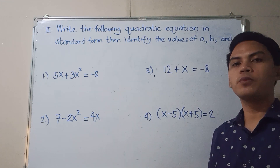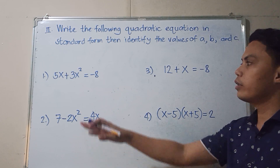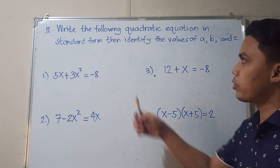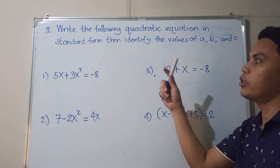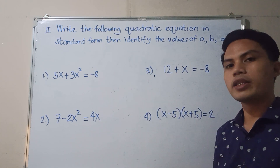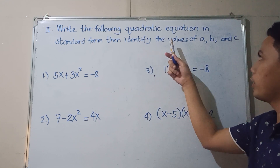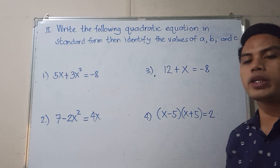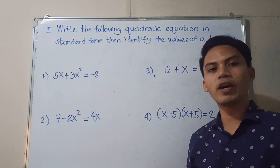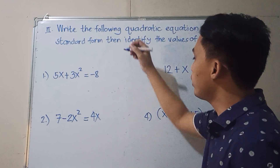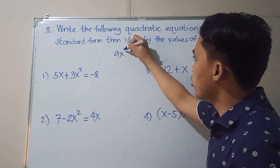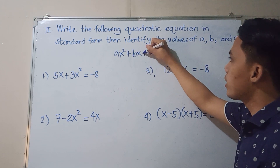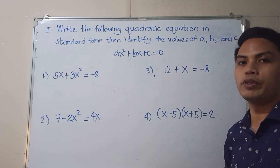This time, we're going to write the quadratic equations into standard form. The instruction is to write the following quadratic equations in standard form and at the same time identify the values of A, B, and C. Remember, the standard form of a quadratic equation is written as Ax squared plus Bx plus C is equal to 0.